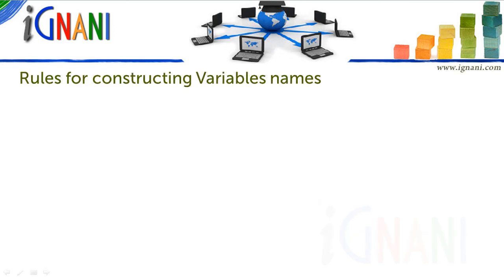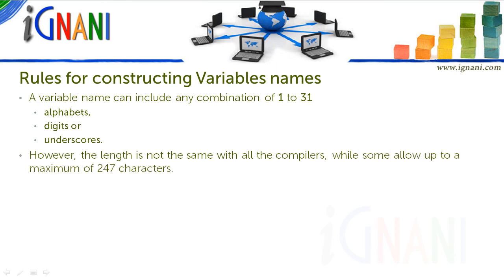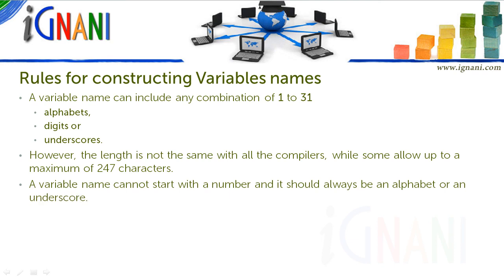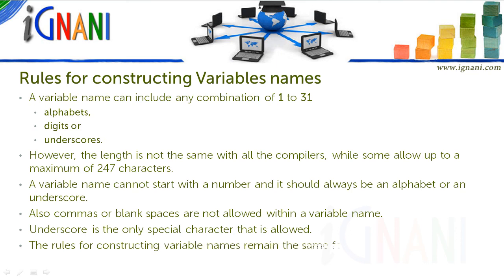Rules for constructing variable names: A variable name can include any combination of 1 to 31 alphabets, digits, or underscores, though the length limit is not the same with all compilers — some allow up to a maximum of 200. A variable name cannot start with a number; it should always begin with an alphabet or an underscore. Commas or blank spaces are not allowed within a variable name. The rules for constructing variable names remain the same for all types of primary and secondary variables.